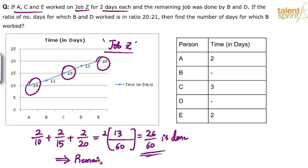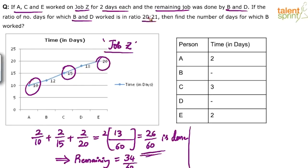26/60 is done, so the remaining work is 1 minus 26/60 = 34/60. This remaining 34/60 was done by B and D. B and D worked in the ratio of days 20 to 21.